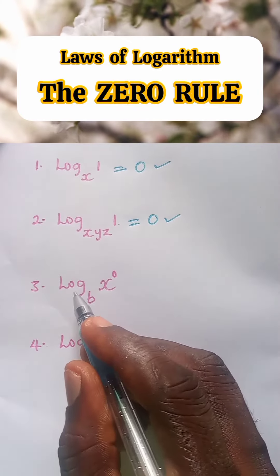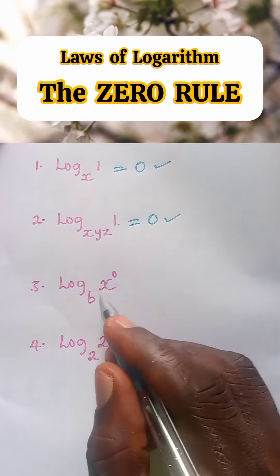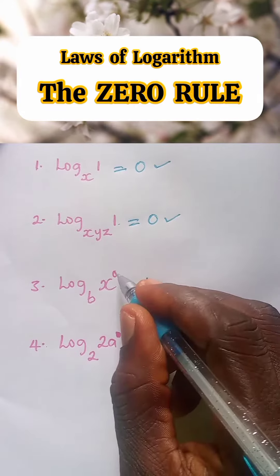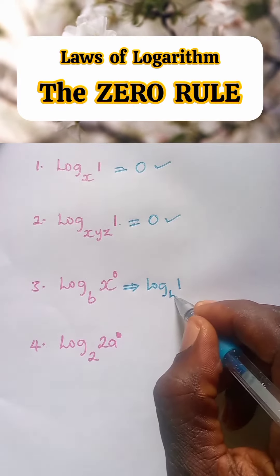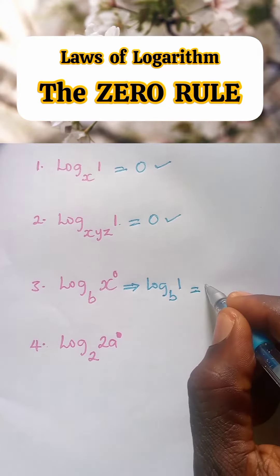Number three, log x raised to power zero to base b. Here, we have log x raised to power zero is one to base b. The log reading of one to any base is equal to zero.